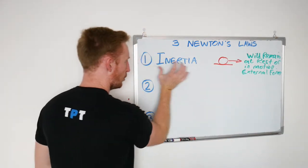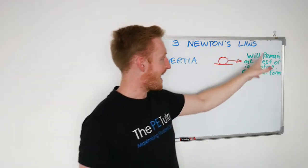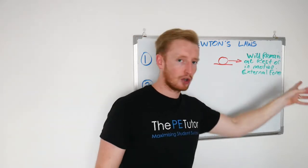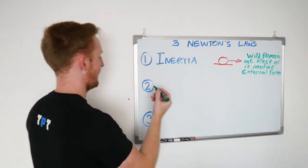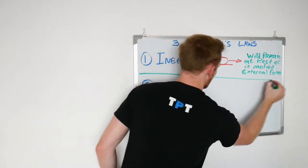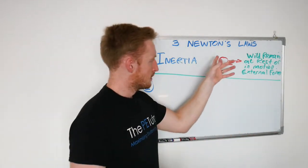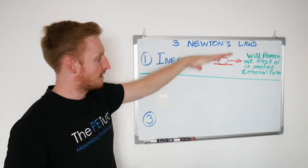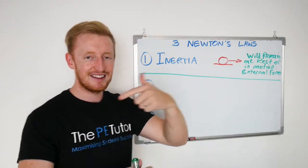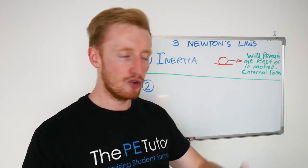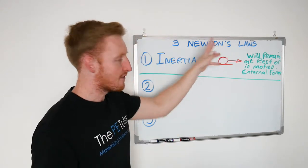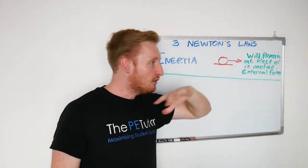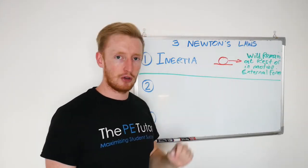So law number one, the law of inertia, the body or the object will remain at rest or in its constant state of motion unless an external force acts upon it. And that is law number one, law of inertia. Now, the reason they're ordered this way, in my mind at least, is it almost describes the sequence of events, the sequence that things happen when we start to analyze a movement in sport. So let's say we have a ball that's currently at rest. The law of inertia states that that ball will stay resting there infinitely unless an external force acts upon it.